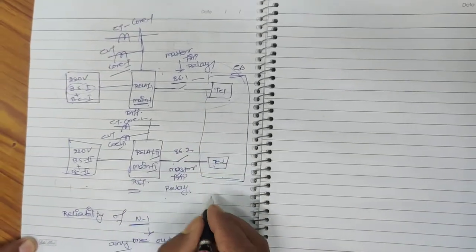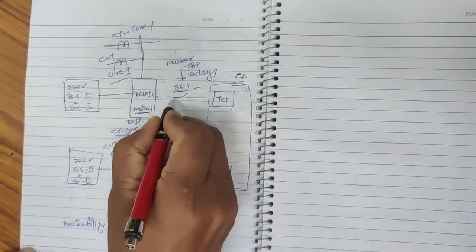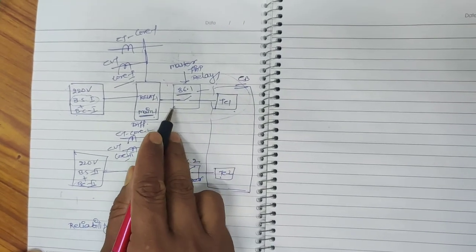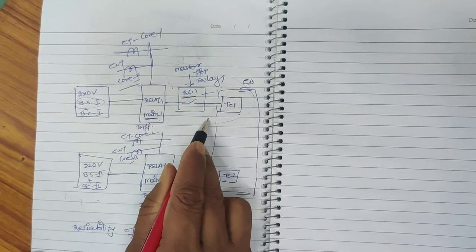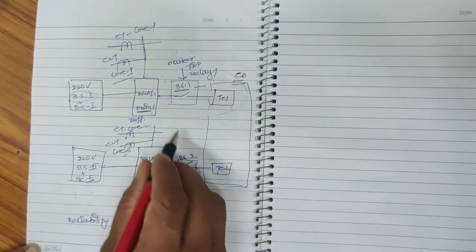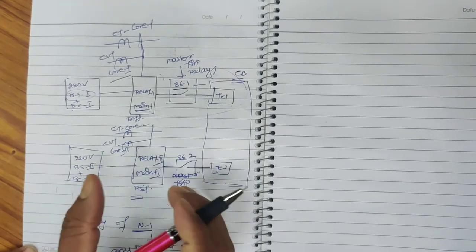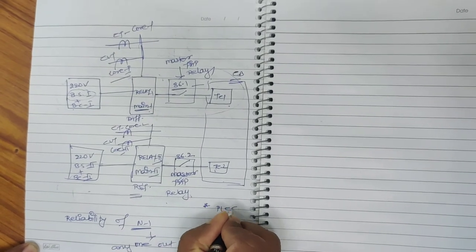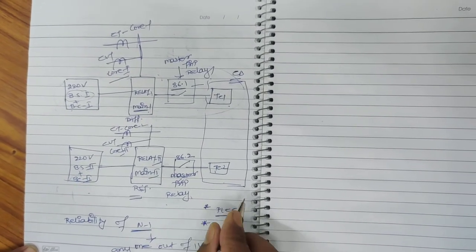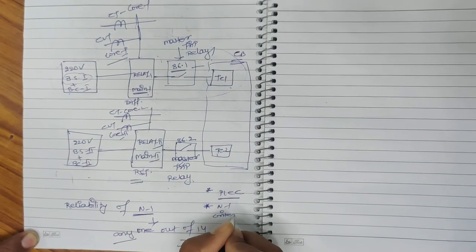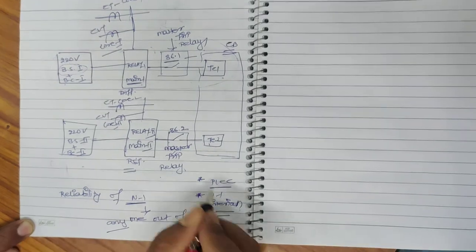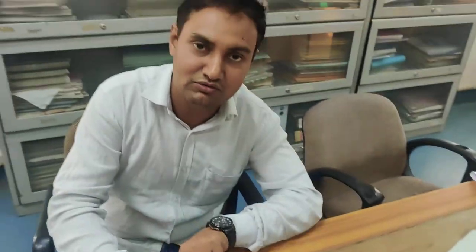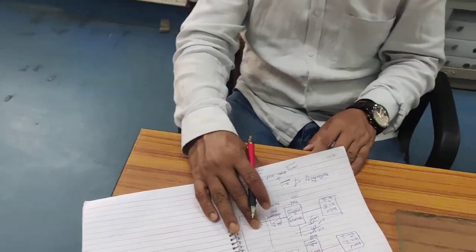We will limit ourselves to this point for now. When we discuss the protection system in detail in later sessions, we will discuss why some wires are connected first to 86.1 and then from 86.1 to the tripping coils, and why in some cases wires are terminated directly from Main 1 to the tripping coils through auxiliary relays. We will also discuss PLCC and why in PLCC the N-1 criteria is different from all other N-1 criteria. I hope this is helpful up to this point. Thank you, and in the next session we will continue from here onwards.